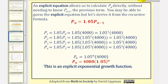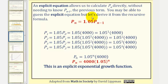Now let's find an explicit equation for the exponential growth. An explicit equation allows us to calculate p sub n directly without needing to know p sub n minus one, or the student population from the previous year. You may be able to guess the explicit equation, but let's derive it using the recursive formula.